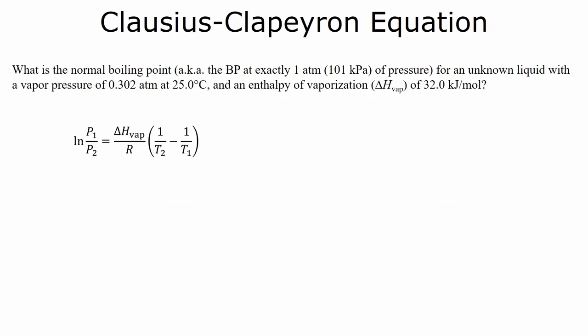So, for instance, let's find the normal boiling point of an unknown liquid that has a vapor pressure of 0.302 atmospheres at 25 degrees Celsius, and an enthalpy of vaporization of 32 kilojoules per mole. So, in this case, instead of solving for pressure, we're actually trying to find the normal boiling point. The normal boiling point is the boiling point at atmospheric pressure. So, we have our initial pressure. Our final pressure is going to be one atmosphere. That's what we want our vapor pressure to equal.